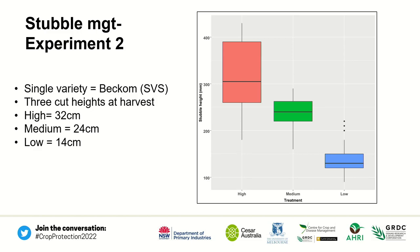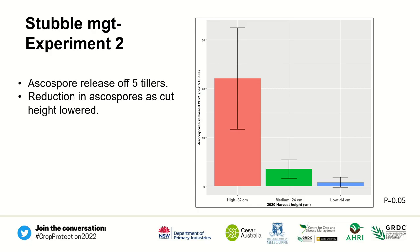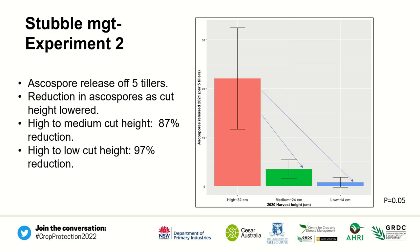Stubble management trial number two: three cut heights — single variety Beckom, high, medium, and low — where we tried to reduce the cut height by one node as we went down. Off just five tillers, we saw a reduction in the number of ascospores released. From a high cut height of 32 centimetres down to 24 centimetres, we saw an 87% reduction in the number of ascospores that came off that stubble. From a high to a low cut height, that was a 97% reduction.